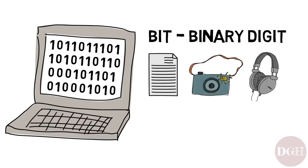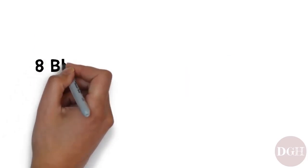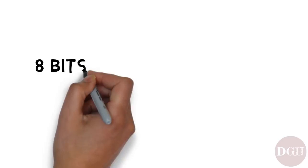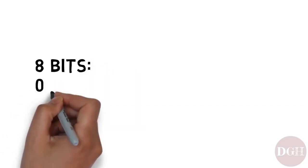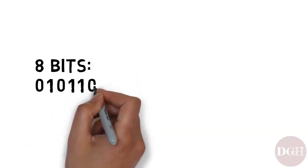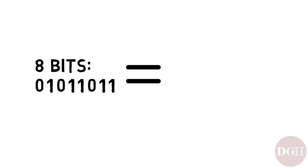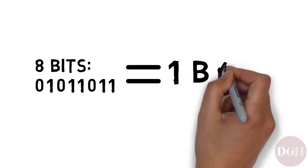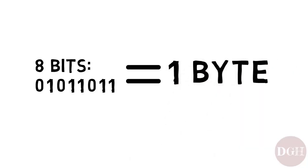The number of bits we have determines how much information we can store. It turns out, if you take 8 of these bits — 8 of these ones and zeros — and put them together, that's called a byte. It's spelled with a Y, and it refers to 8 bits put together.